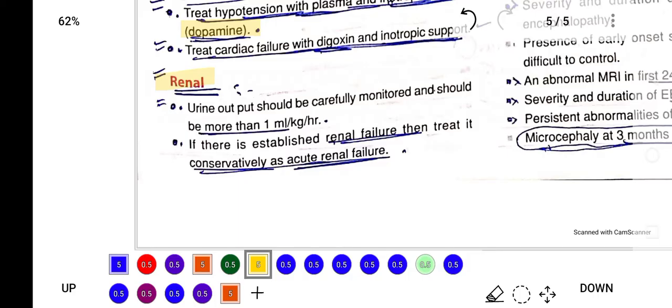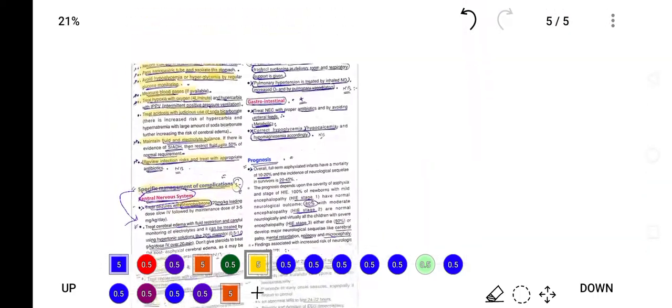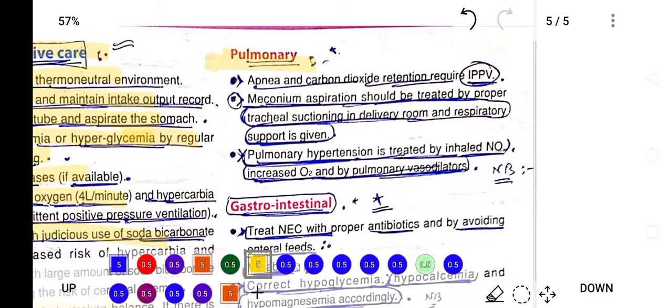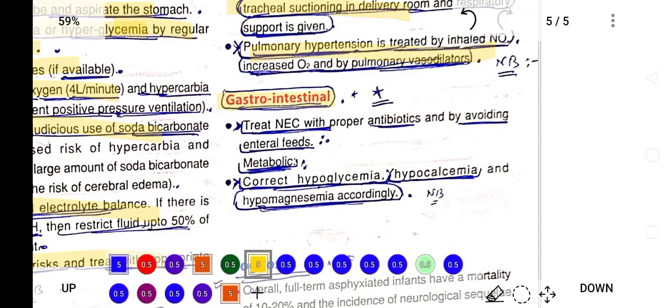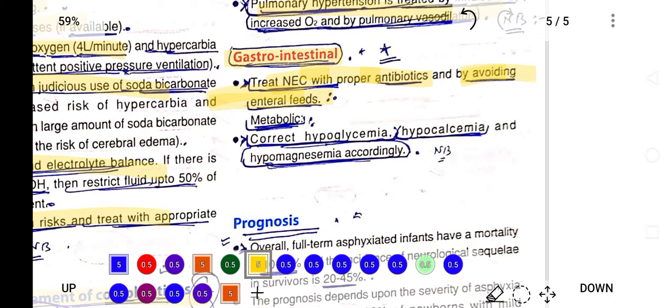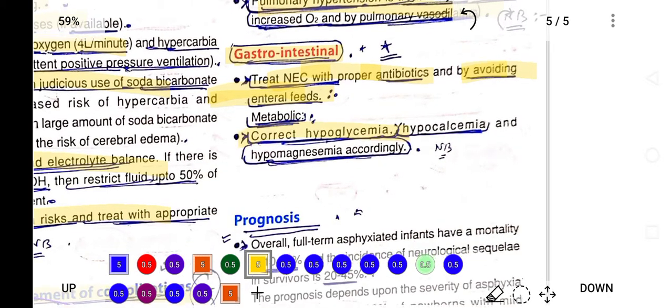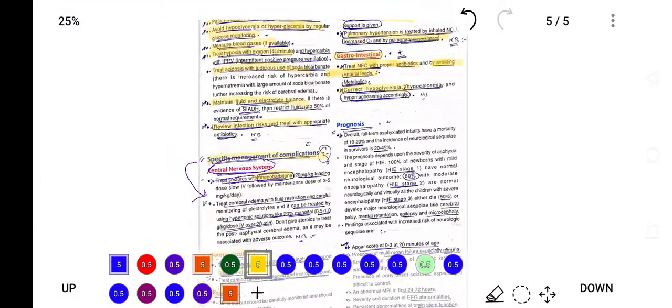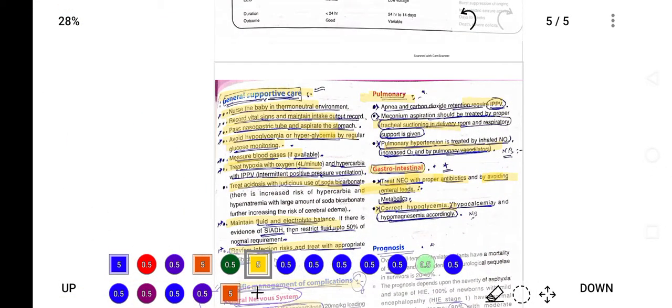If renal complications develop, treat with diuretics. If there are pulmonary complications, ventilatory support and oxygen should be given. For gastrointestinal complications, if the baby has developed necrotizing enterocolitis, antibiotics should be given and avoid enteral feeding. Correct hypoglycemia in the baby. In this way we can treat birth asphyxia and save the life of the baby.